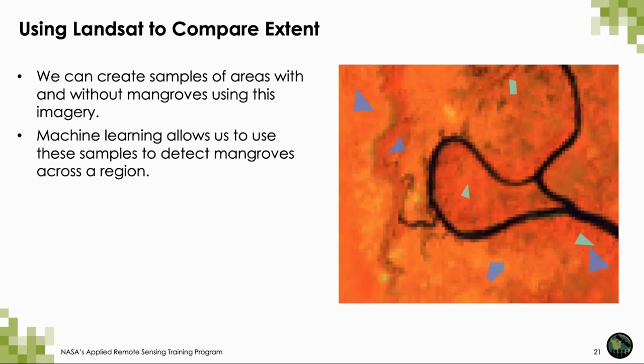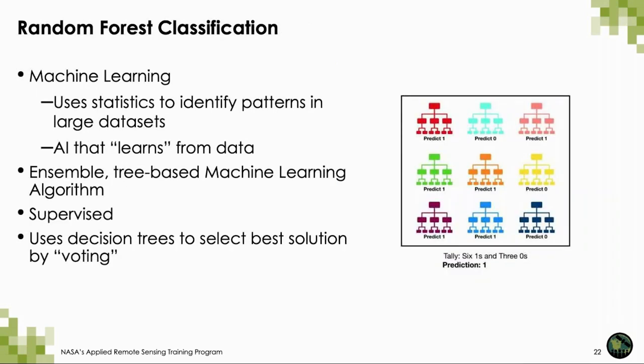Through Earth Engine and using Landsat data, we can create samples of areas with and without mangroves using this imagery. Machine learning allows us to use these samples to detect mangroves across a region. For this workshop, we will be using a random forest classification, which is a type of machine learning that uses statistics to identify patterns in large data sets. It is a type of artificial intelligence that learns from data and allows us to process large quantities of data to answer particular research questions.